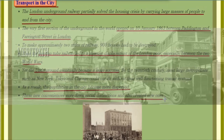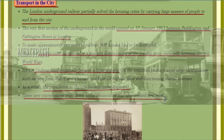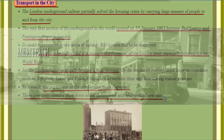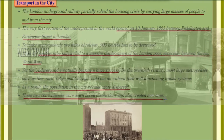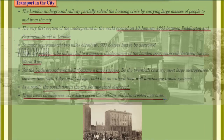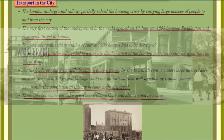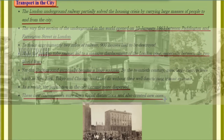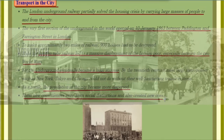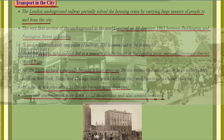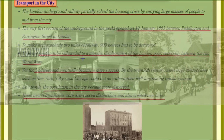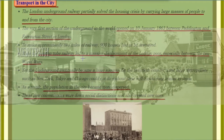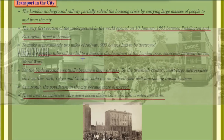The London Underground Railways partially solved the housing crisis by carrying large masses of people to and from the city. The very first section of the underground in the world opened on 10th January 1863 between Paddington and Farringdon Street in London. To make approximately two miles of railway, 900 houses had to be destroyed. Thus, the London tube railway network led to a massive displacement of the London poor, especially between the two world wars.